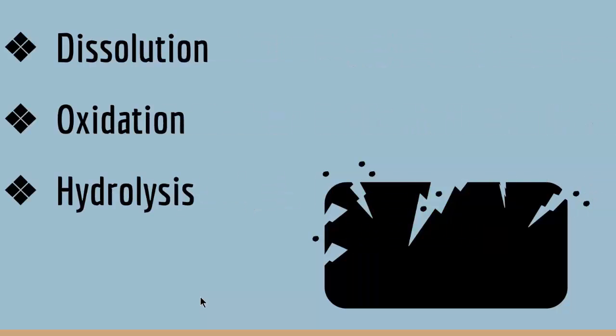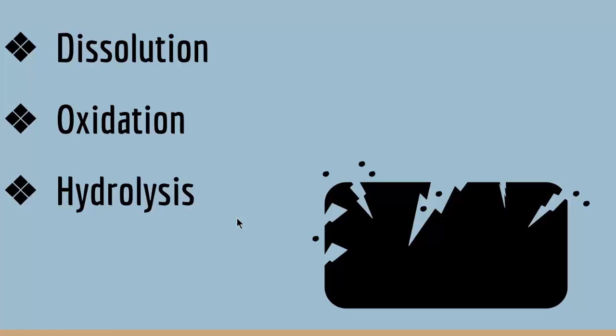We have three types of chemical weathering. We have dissolution, we have oxidation, and we have hydrolysis. In the following slides we will look at each of these in more detail.